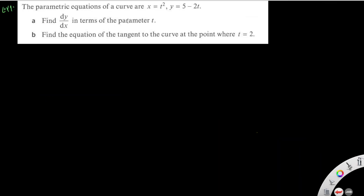Example one: the parametric equations of a curve are x equals t squared and y equals five minus two t. Part a — find dy/dx in terms of the parameter t.